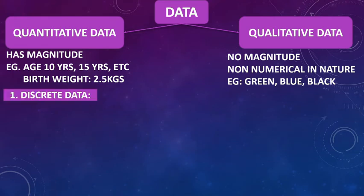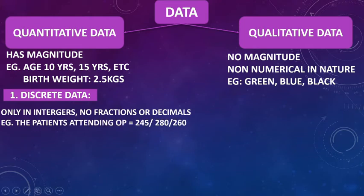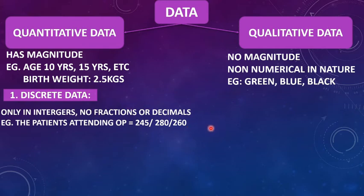Discrete data: some variables can only be taken in full form, that is integers, and not fractions or decimals. Such data is called discrete. For example, the number of patients attending an outpatient department can be 245, 280, or 260 — it can never be 245.25 or 245.5. We can never express that type of data in decimals, so such data is called discrete data.